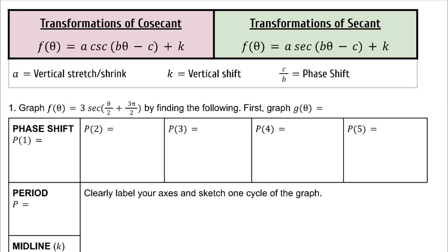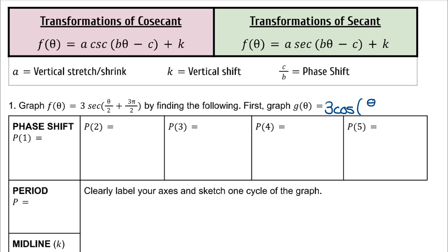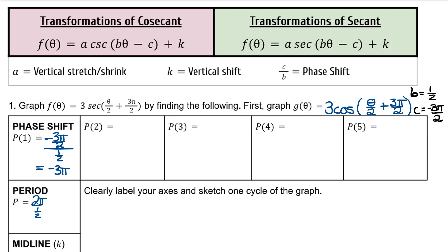Let's graph f(θ) = 3 secant(θ/2 + 3π/2). First, find all the important information for graphing the corresponding cosine function: g(θ) = 3 cosine(θ/2 + 3π/2). In this case, b, the coefficient of θ, is 1/2, and c is negative 3π/2. Recall that the phase shift is c over b, and the new period is 2π divided by b. P5 can be found by adding the period to P1, and the other values are equally spaced.